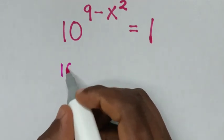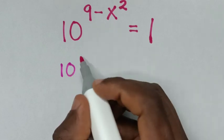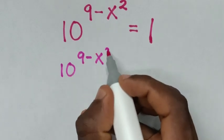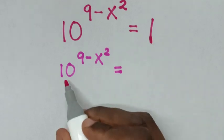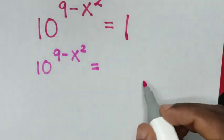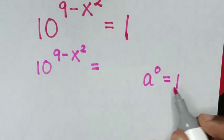Now, 10 to the power of 9 minus x squared equals 1. To have the same base of 10, we'll apply the rule that a to the power of 0 equals 1.